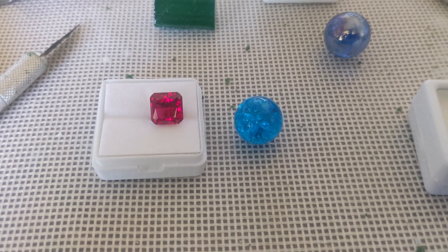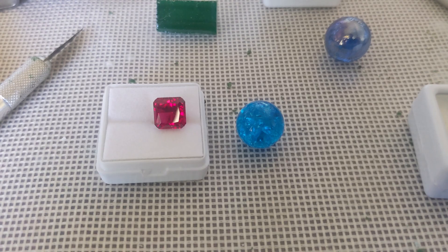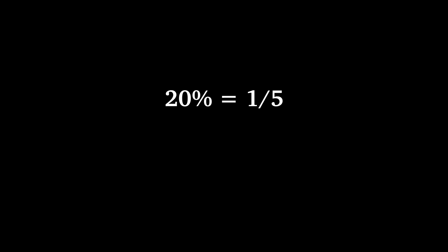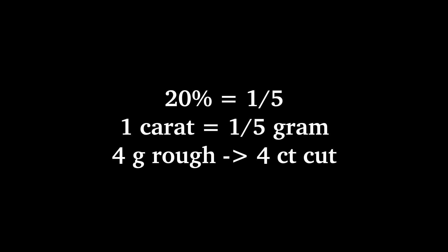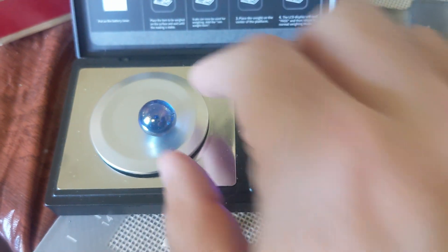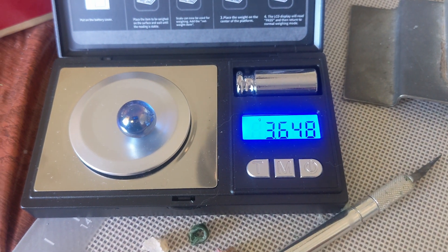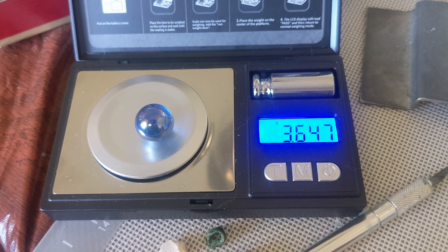20% of that hypothetical 20-carat rough is a 4-carat stone. 20% is one-fifth. One carat is one-fifth of a gram, so whatever the weight in grams is becomes your minimum goal for yield in carats. If you're buying that sapphire but it's labeled 4 grams, then your yield should be about 4 carats or better.